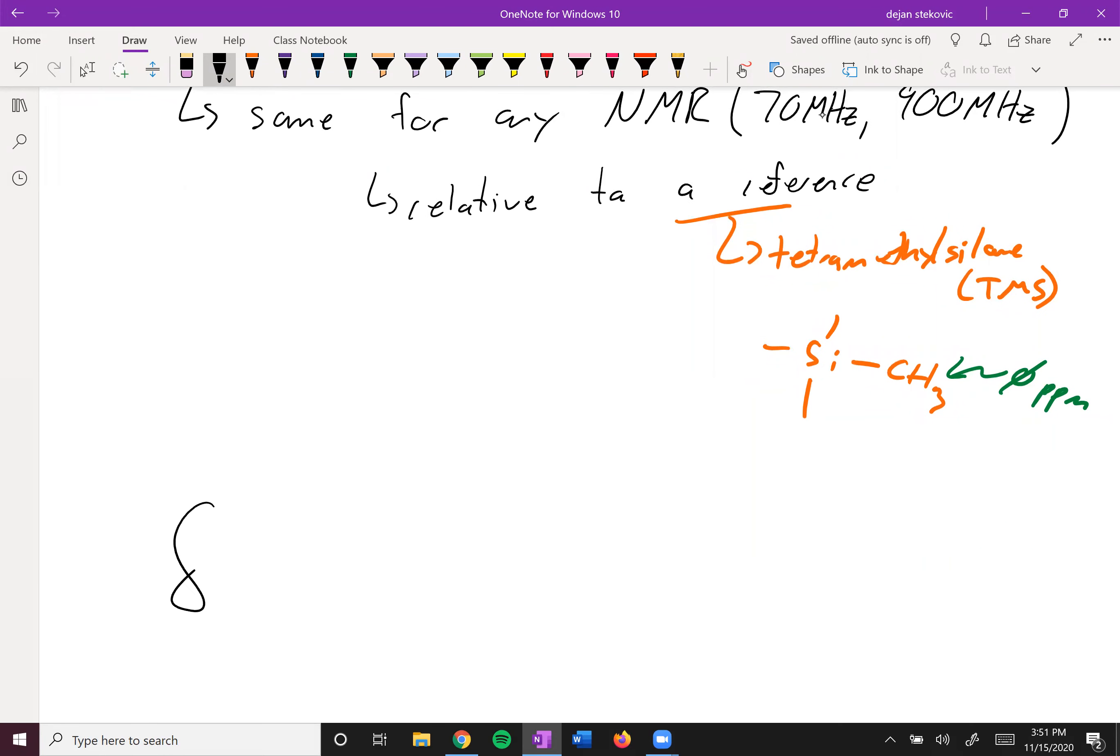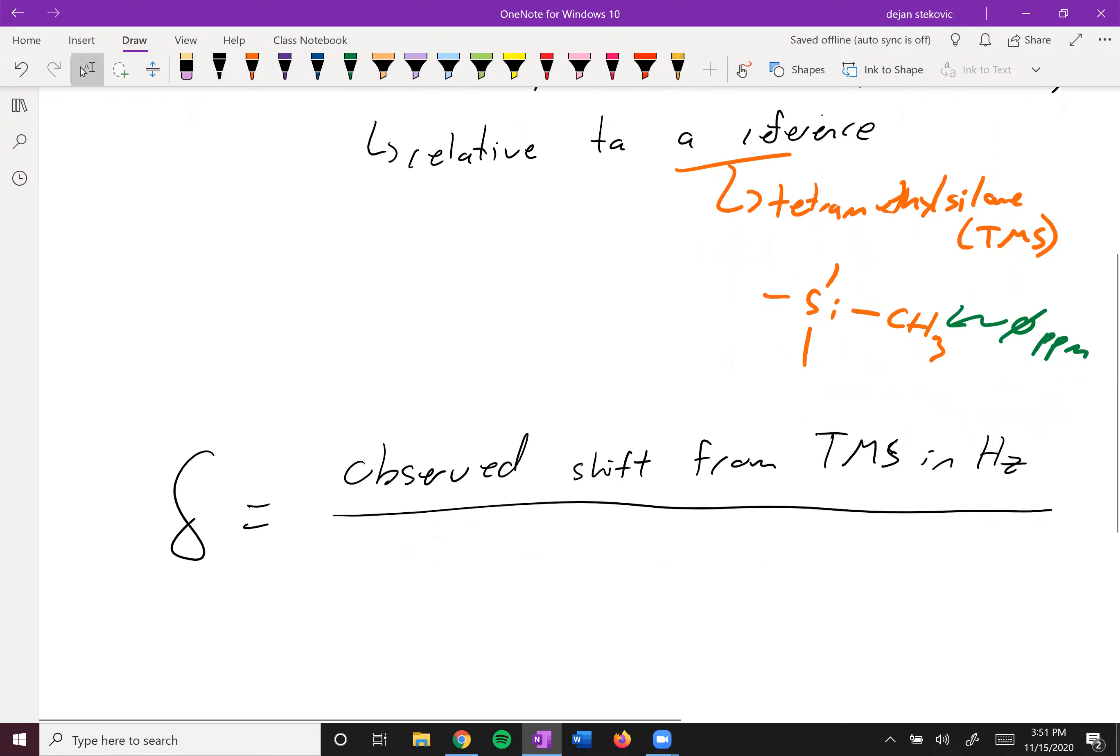So this chemical shift is equal to the observed shift from the TMS signal in hertz. This corresponds to the radio waves used, divided by the frequency of the instrument.